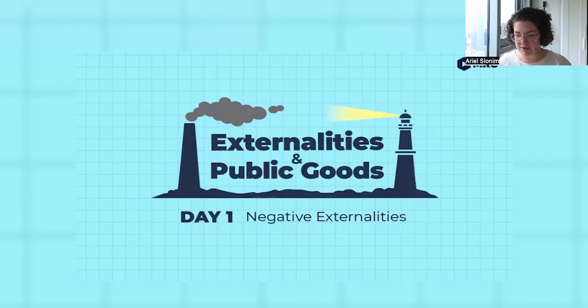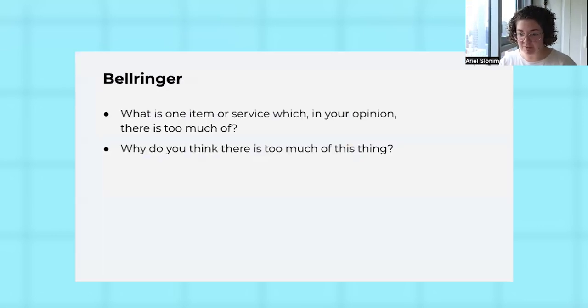Welcome to externalities and public goods day one. We're going to be sharing a little bit of behind-the-scenes info in these walkthrough videos, telling you what we were thinking for different activities. For the unit plan, we have students start by thinking of what item may be overproduced. They aren't necessarily going to see an externality here, but we want to get them thinking, why might something be overproduced?